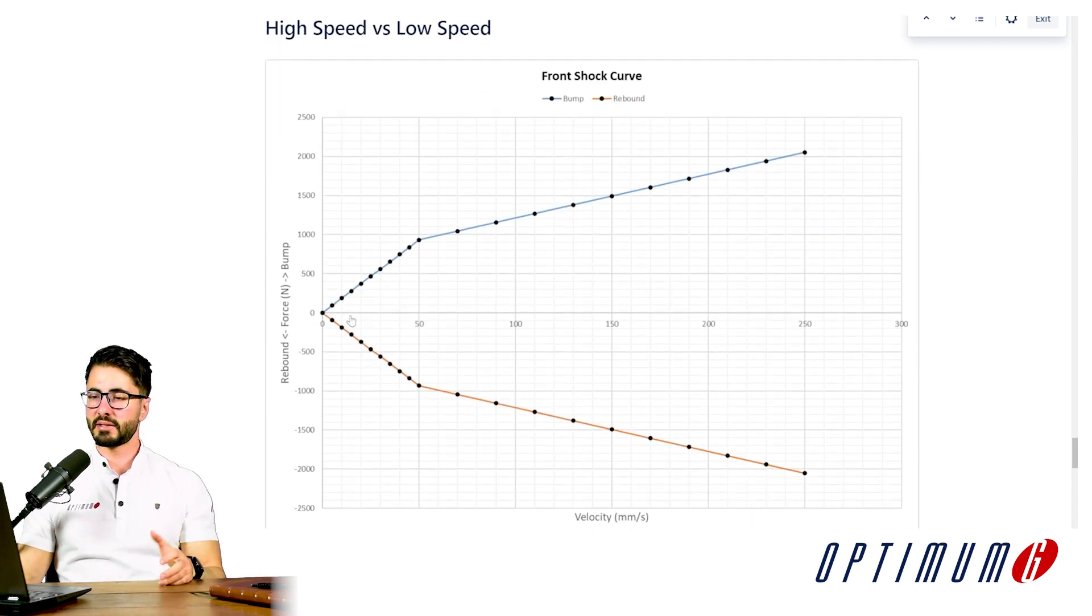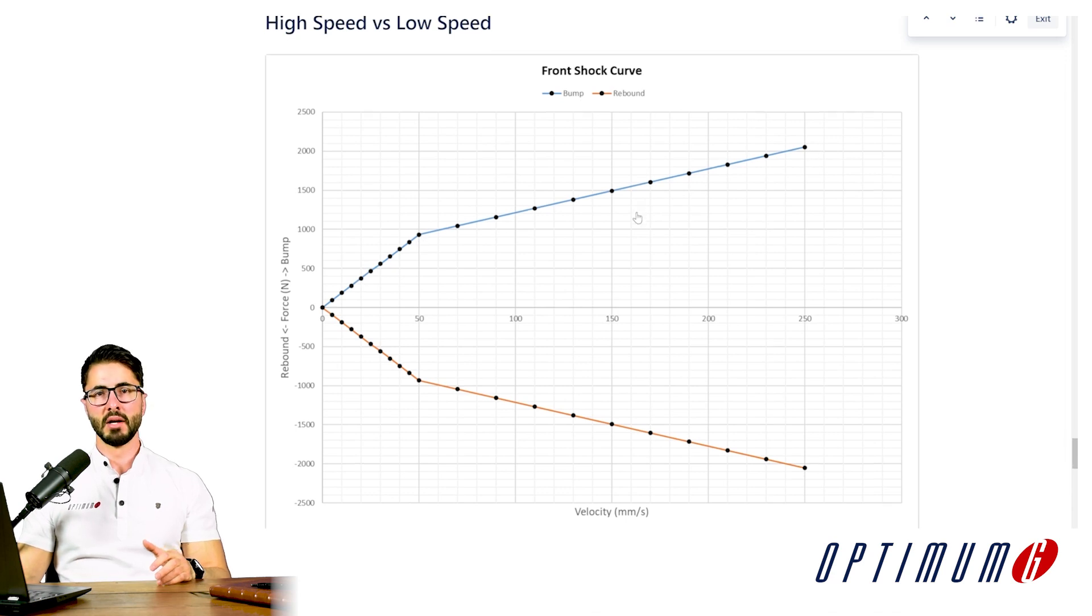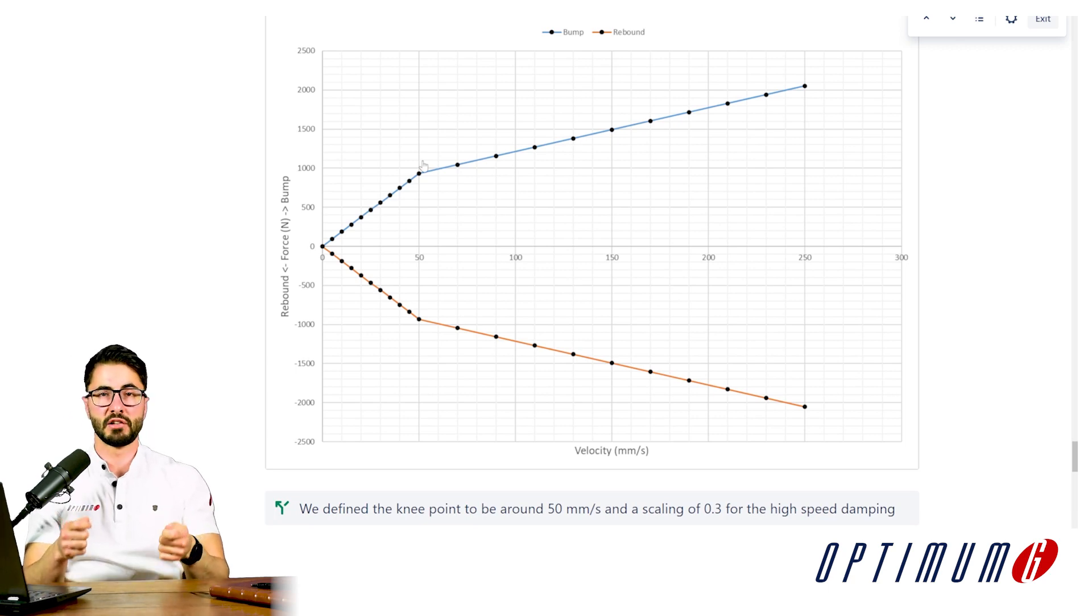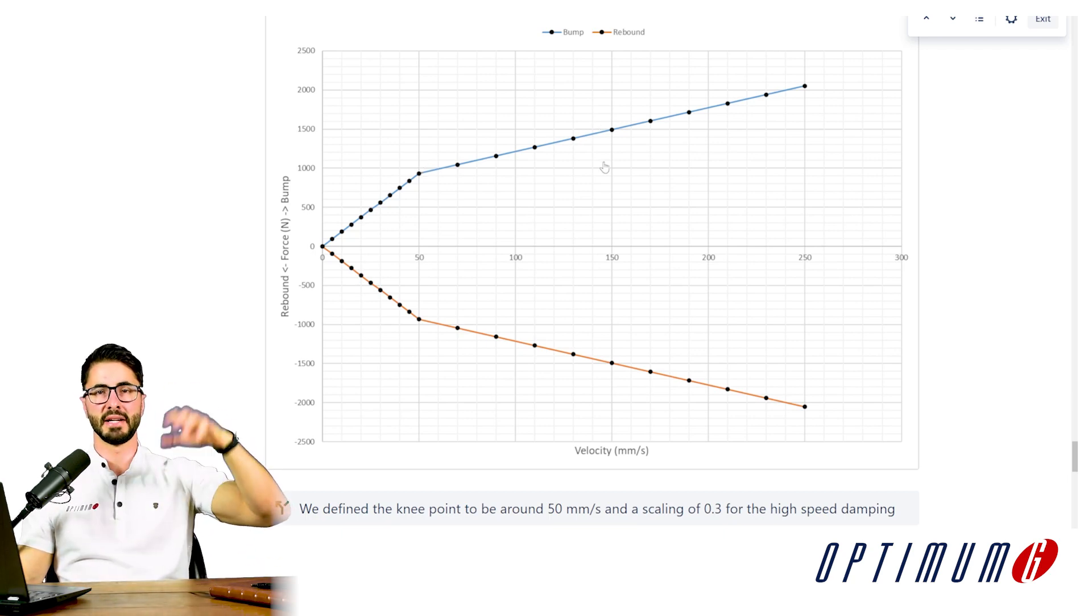So if we look at the damper curve, we have the low speed region, then we have the knee point, and then we have the high speed region. Typically, we could try to design the low speed to include all of the speeds when the car is rolling, pitching, going up and down slowly. And for high speed, it could be when the suspension is oscillating over bumps and over curbs.